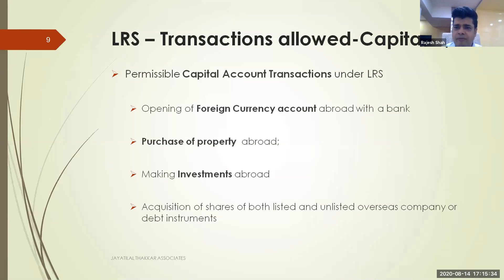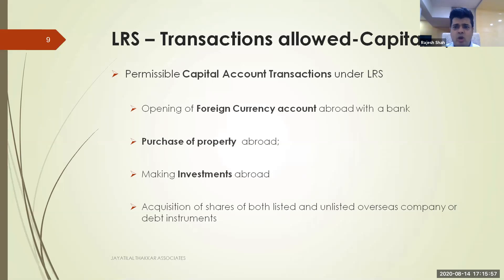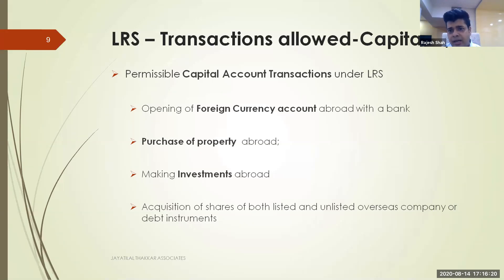The six categories allowed under capital account transactions include: opening a foreign bank account in foreign currency (Singapore dollar, US dollar, pound, euro, etc.), which can be in individual name or jointly with a spouse or minor children. However, a resident cannot remit to a foreign bank account that is not in their own name — for example, a wife cannot remit to an account held only in the husband's name.